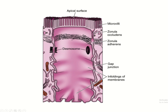At the apical surface, modifications are observed known as cell surface modifications — for example, microvilli, stereocilia, and cilia. On the lateral side of the epithelial tissue, special structures are present known as the junctional complex. Near the apical region, these include the zonula occludens, zonula adherens, gap junction, and desmosome.